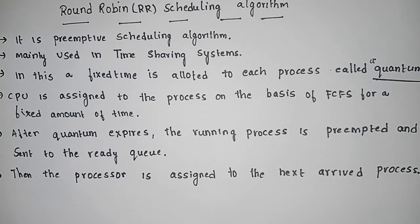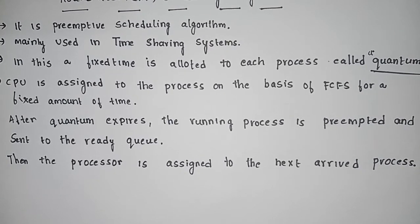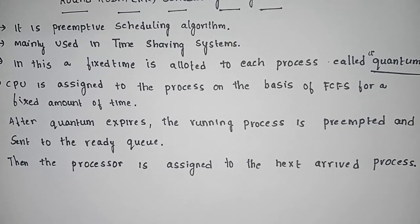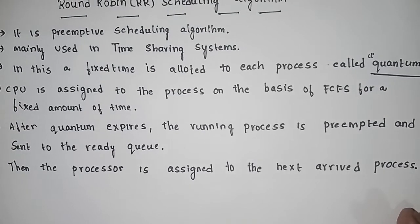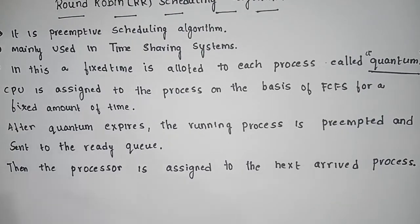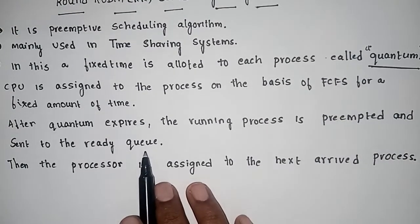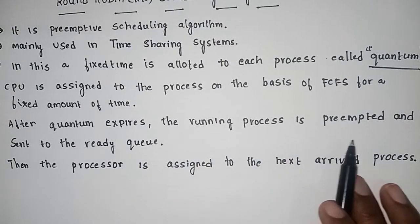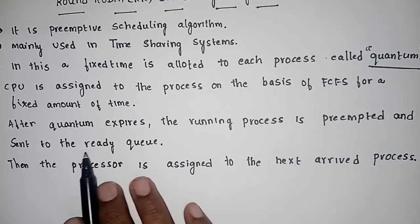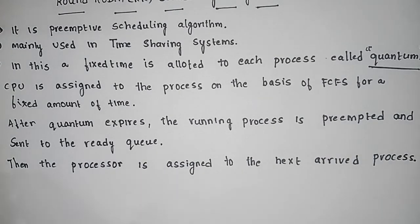The CPU is assigned to a process on the basis of FCFS for a fixed amount of time. After the time quantum expires, the running process is preempted and sent to the ready queue. We will execute the time quantum work in every process.